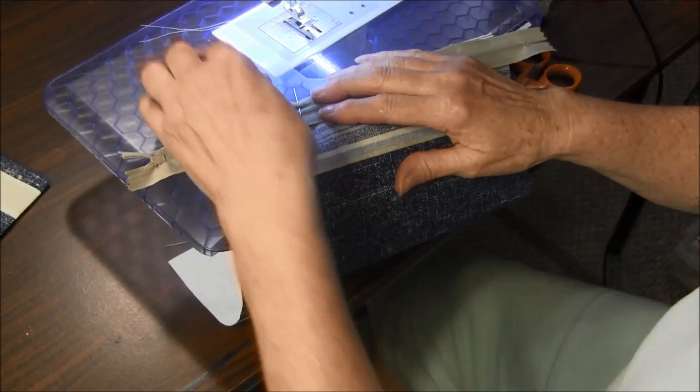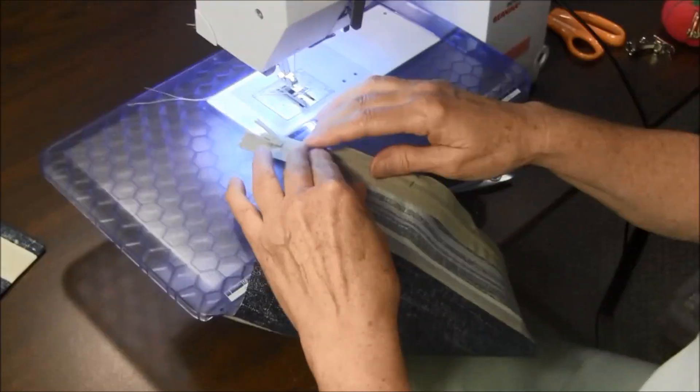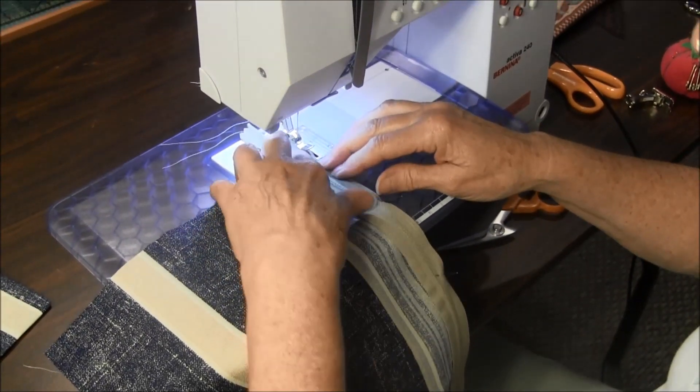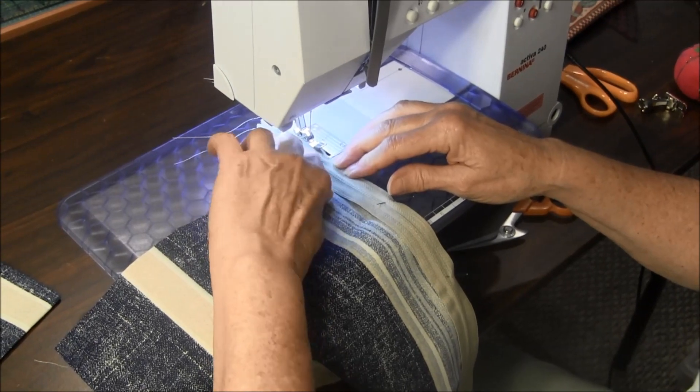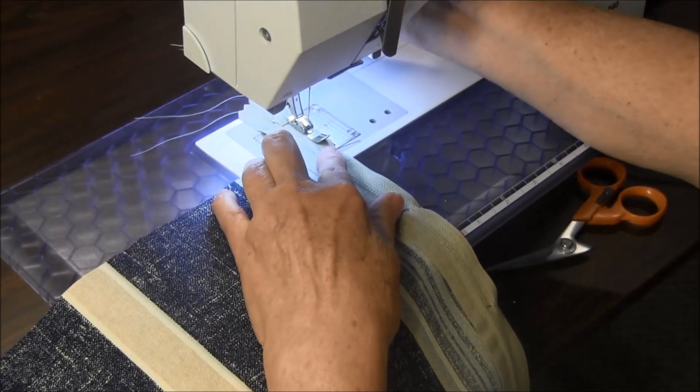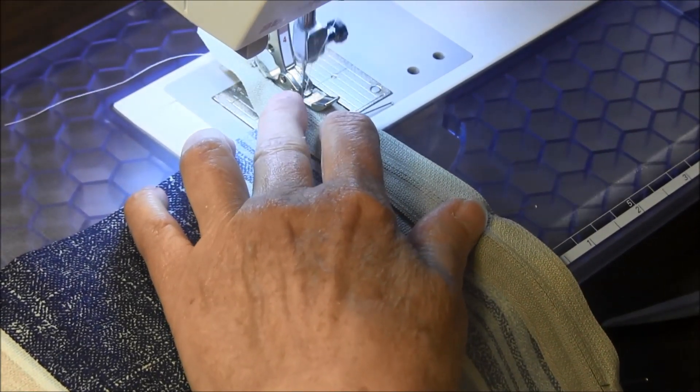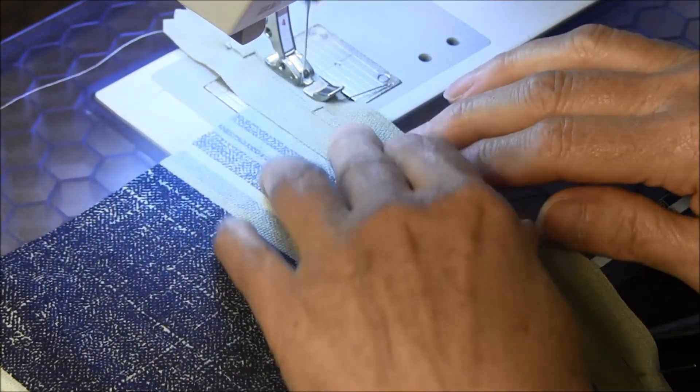Put your zipper foot on your sewing machine and you're going to sew close to where the teeth of the zipper are. I'm going to backstitch and then go forward.